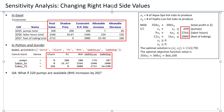In the previous episode on sensitivity analysis for right-hand side value changes, I showed you examples where we changed right-hand sides within the allowable increase or decrease, or within the range of feasibility, in which case we could always use the shadow price to determine the change in the optimal objective function value.